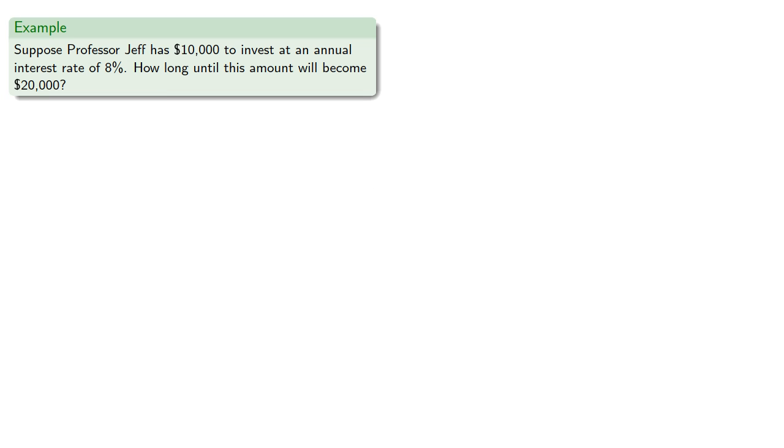So our fourth unknown could be the amount of time. So suppose we have $10,000 to invest at an annual interest rate of 8%. How long until this amount will become $20,000? So we have the amount, $10,000. Our interest rate, 0.08. Our final amount, $20,000.